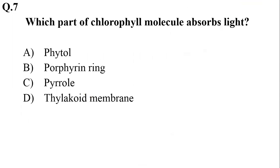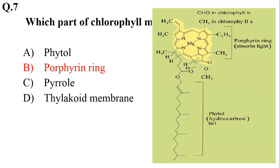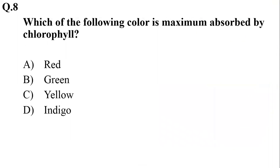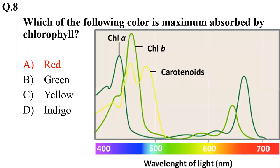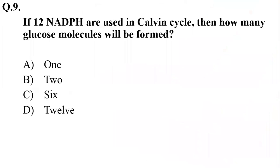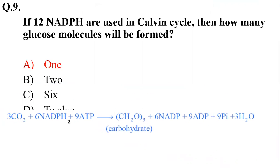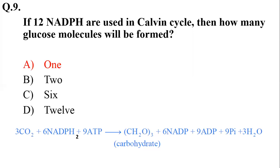Which part of the chlorophyll molecule absorbs light? It is the porphyrin ring that absorbs light. Which of the following colors is maximally absorbed by chlorophyll? It is red. If 12 NADPH are used in the Calvin cycle, how many glucose molecules will be formed? One Calvin cycle requires 6 NADPH and forms half a glucose molecule, so 12 NADPH will form one glucose molecule.